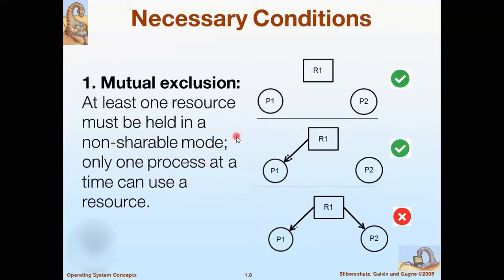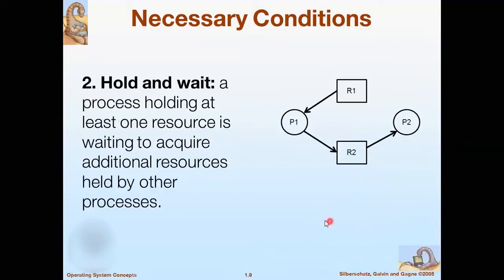Each resource is either available or currently assigned to exactly one process. For instance, a resource R1 that is free and not assigned to any particular process is fine. A resource allocated to exactly one process is also fine. But for deadlock to occur, the resource cannot be shared between two processes P1 and P2. The next condition is hold and wait — a process holding at least one resource is waiting to acquire an additional resource held by another process, meaning a process holding a resource can request another resource.